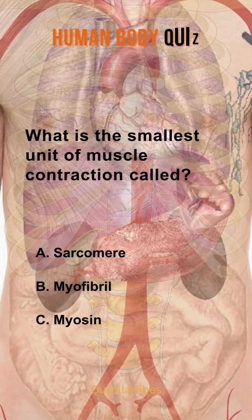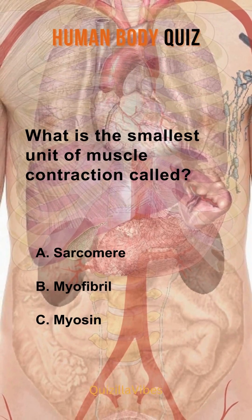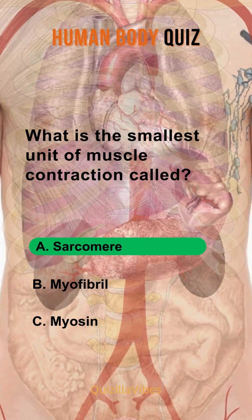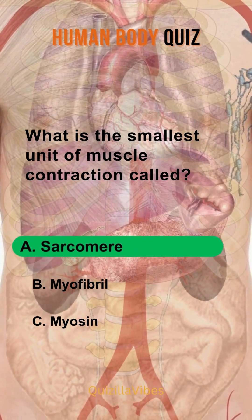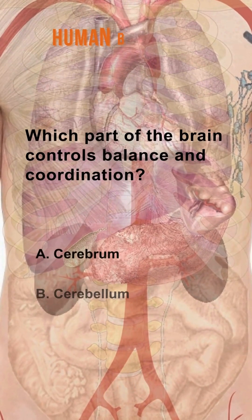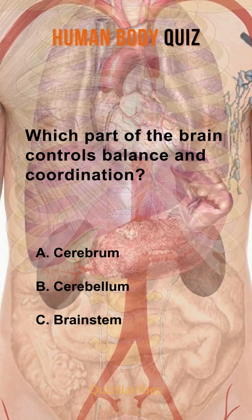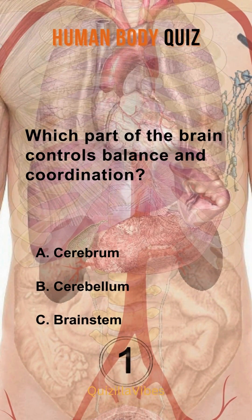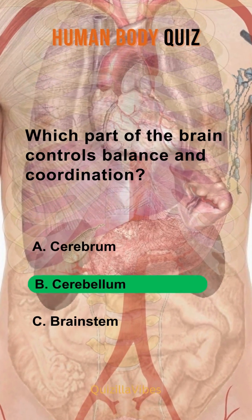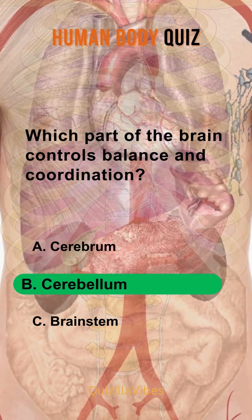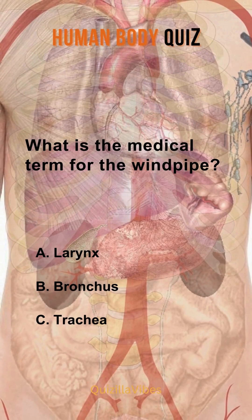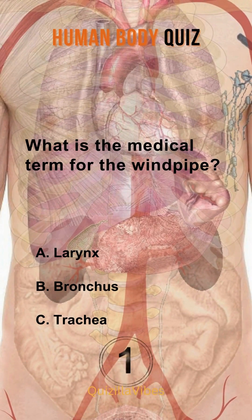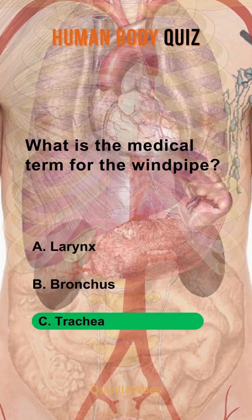What is the smallest unit of muscle contraction called? Sarcomere. Which part of the brain controls balance and coordination? Cerebellum. What is the medical term for the windpipe? Trachea.